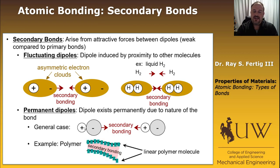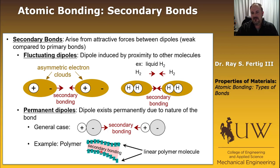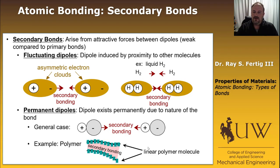An example of secondary bonding is in polymers. The polymer chain backbone is connected by covalent bonds, but the chains themselves have hydrogens sticking off the ends that have a permanent dipole. This makes the chains bond together via secondary Van der Waals bonding, which allows the chains to hook together and become entangled, but they can also still slip and move. That's why we typically don't see modulus values anywhere near those of materials bonded exclusively with primary bonds.